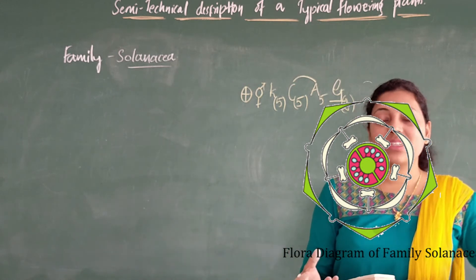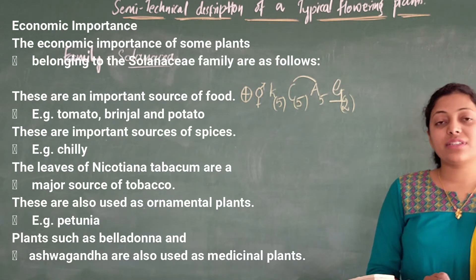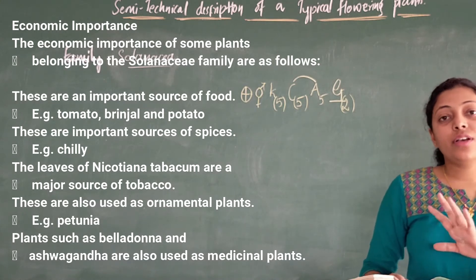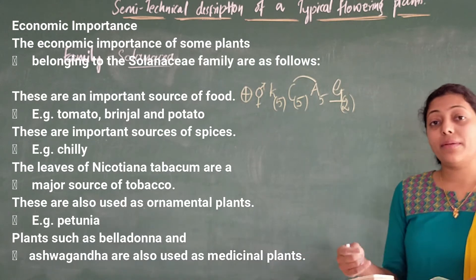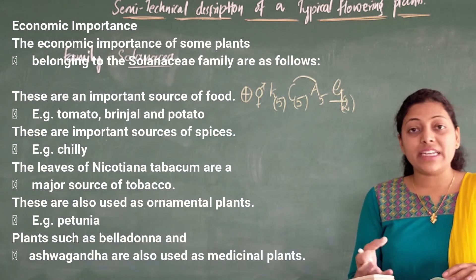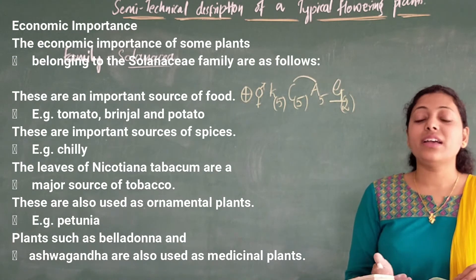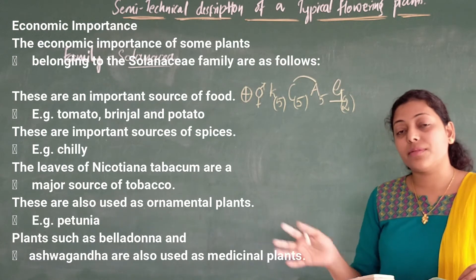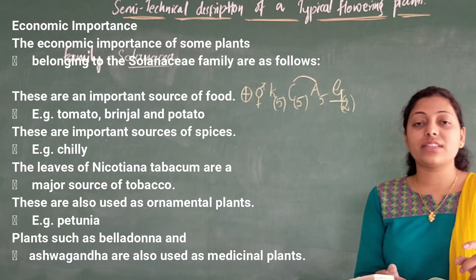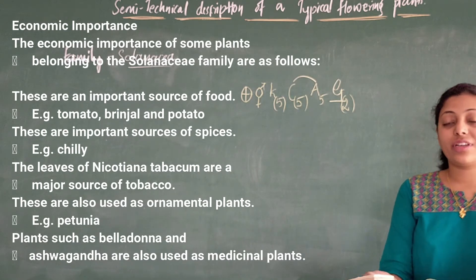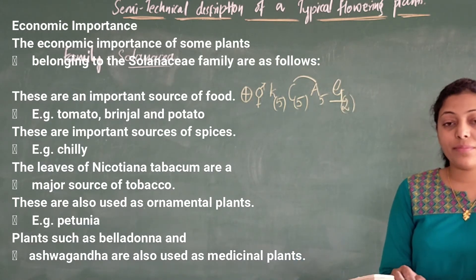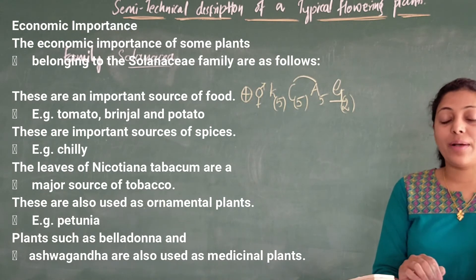Now let's look at the economic importance of the family Solanaceae. Many Solanaceae plants are used for food purposes — for example, potato, tomato, and brinjal are commonly used as food. As a spice, chillies also belong to Solanaceae and are used as a spice. As medicine, belladonna and ashwagandha are used as medicinal plants. As a fumigatory, tobacco plants are used. For ornamental purposes, petunia is the example. These are the different economic importances of the Solanaceae family.